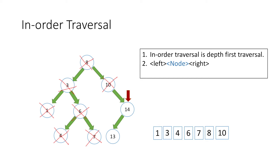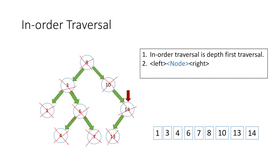We move right to node 14. Following the rule we go left to node 13. Since node 13 has no left child, we print its value which is 13 and mark it as traversed. It has no right child so we move up to node 14. We have traversed all nodes to its left, so we print 14. In-order traversal is now complete. Notably, in-order traversal of a binary search tree always gives node values in ascending sorted order.